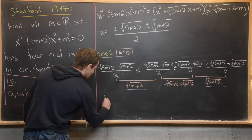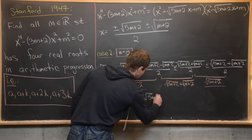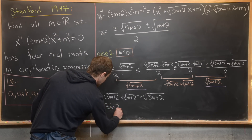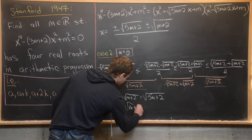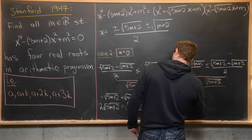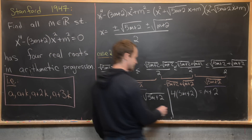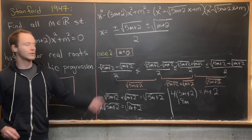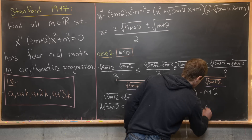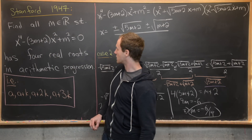For arithmetic progression we need −√(5m+2) + √(m+2) = √(5m+2), giving 2√(5m+2) = √(m+2). Squaring: 4(5m+2) = m+2, so 20m + 8 = m + 2, giving 19m = −6, so m = −6/19. This is our second value giving four real roots in arithmetic progression.